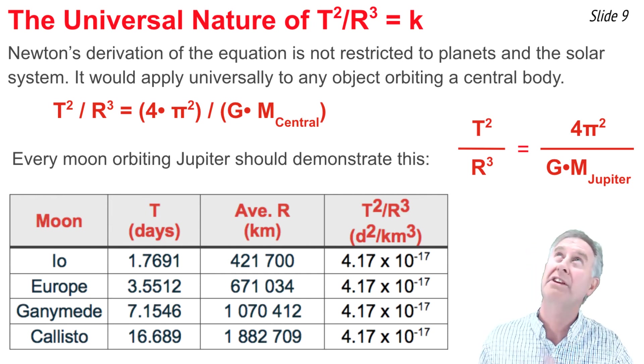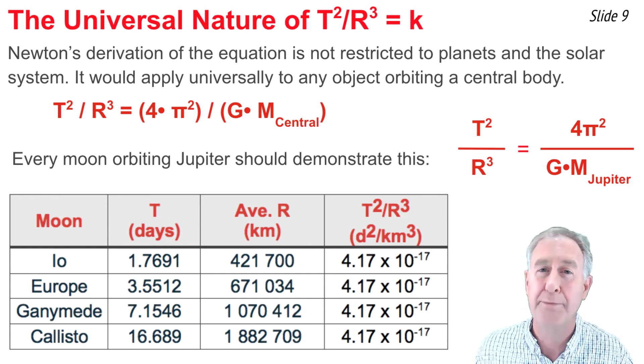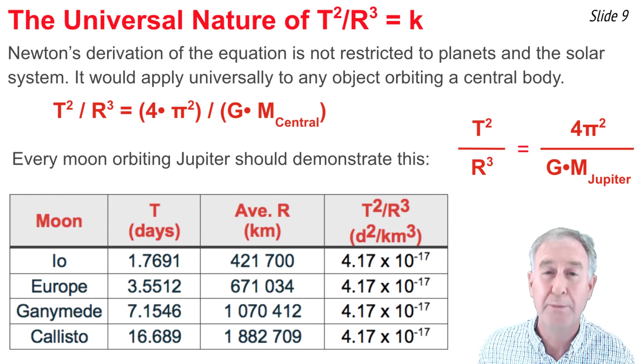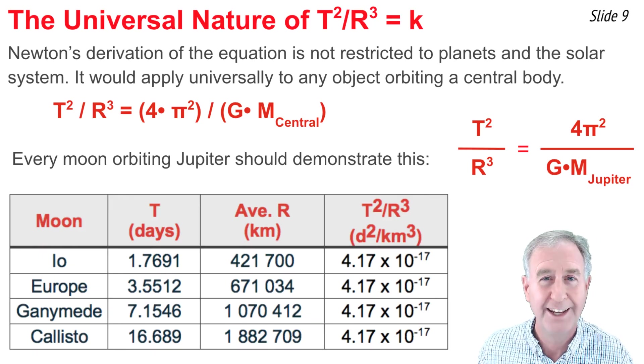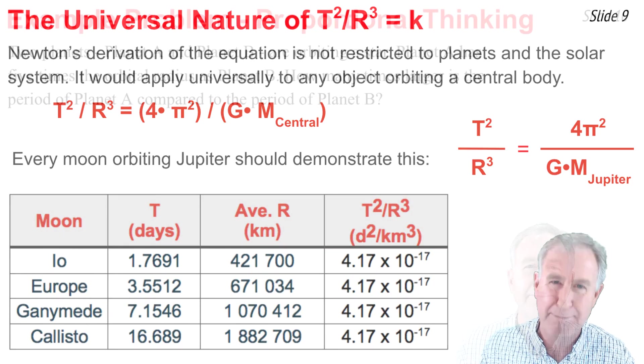which is one reason why this equation is sometimes called the massing the planet equation, because we use the orbital period and orbital radius of the moons of a planet to determine the mass of that planet.